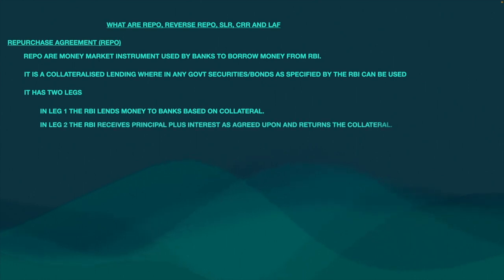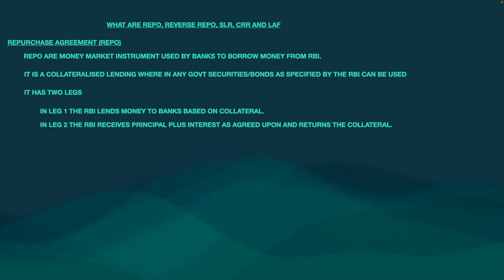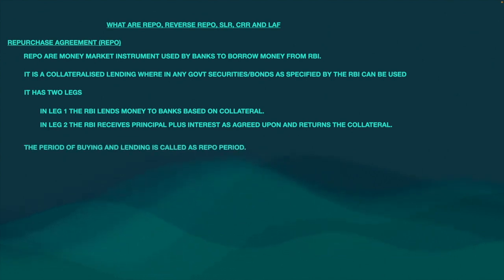In leg two, the RBI receives principal plus some interest as agreed upon and returns the bonds back to the banks. So this is known as repo, or repurchase agreement. The period of buying and lending is called as the repo period.